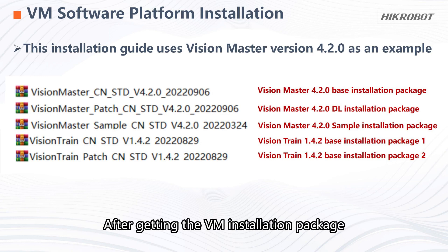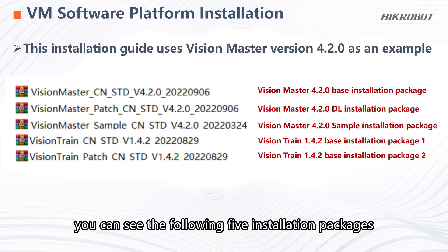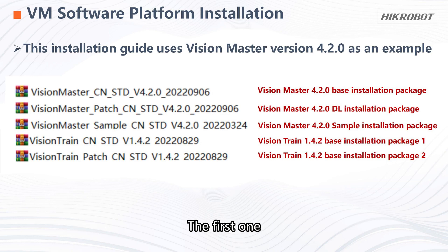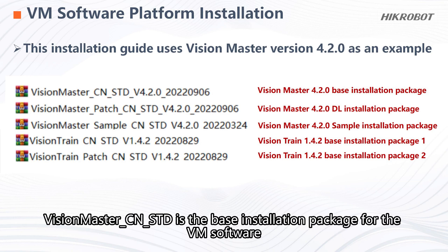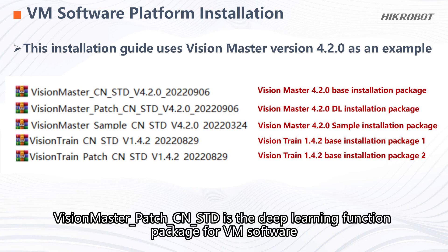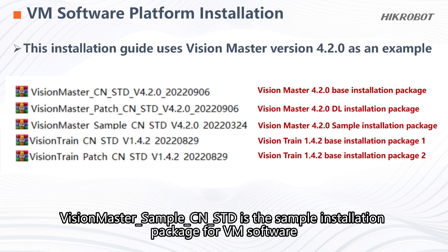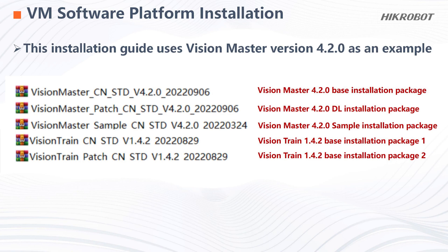After getting the VM installation package, you can see the following five installation packages. The first one, VisionMaster CNSTD, is the base installation package for the VM software. The second one, VisionMaster Patch CNSTD, is the deep learning function package for VM software. The third one, VisionMaster Sample CNSTD, is the sample installation package for VM software.